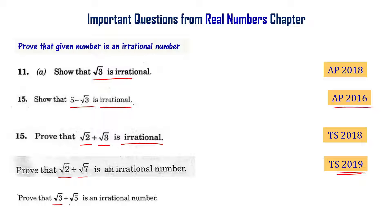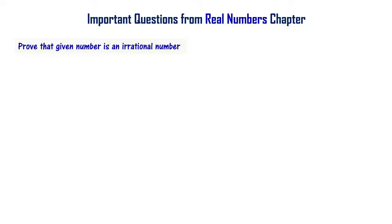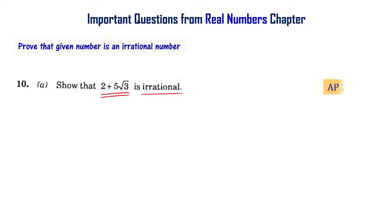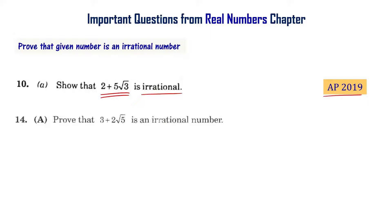Prove that root 3 plus root 5 is an irrational number — that is AP final exam supplementary exam 2016. Show that 2 plus 5 root 3 is an irrational number — that is AP final exam 2019. Prove that 3 plus 2 root 5 is an irrational number — that is Telangana final exam 2015.